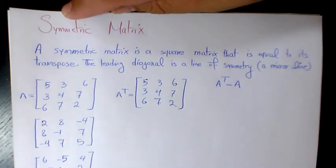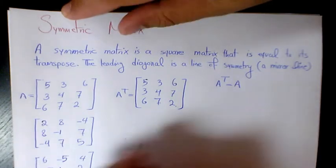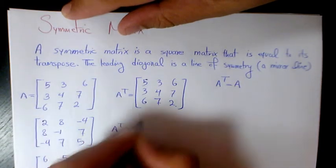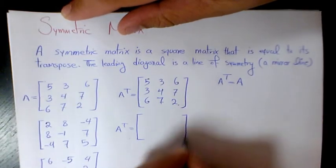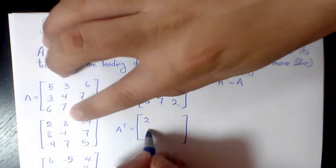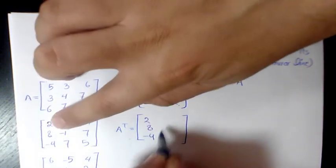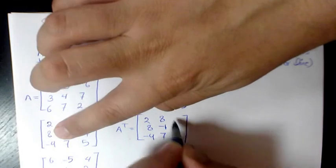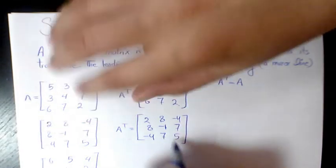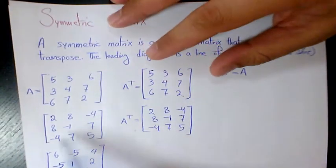Now for the second one, 2, 8, negative 4; 8, negative 1, 7; negative 4, 7, and 5. So as you see here, these two are the same as well.